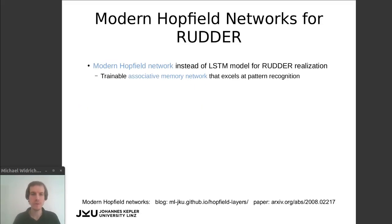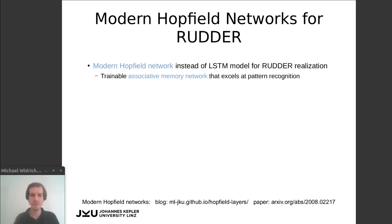In our paper, we propose to replace this LSTM model with a continuous modern Hopfield network. Continuous modern Hopfield networks are powerful associative memory networks with large storage capacity. They can be inserted plug-and-play into deep learning architectures. These continuous modern Hopfield networks excel at recognizing patterns, and the best thing about them is they require extremely few samples to train.